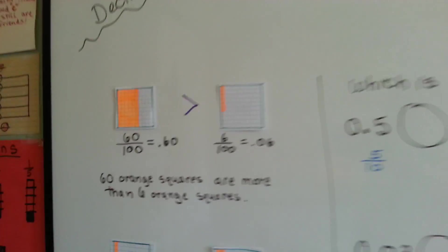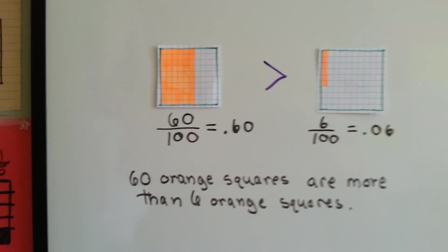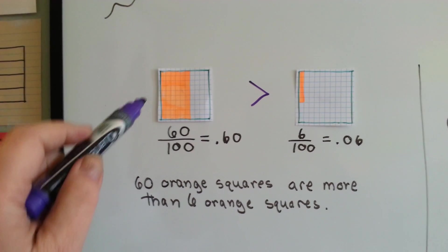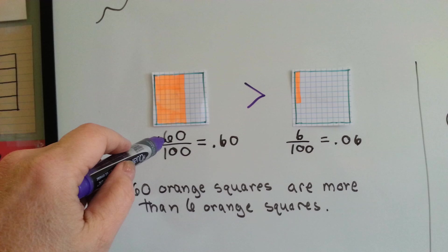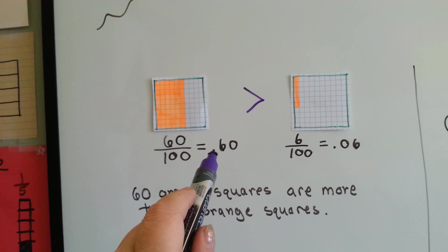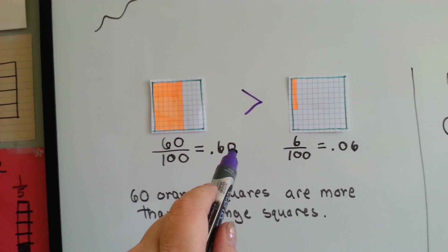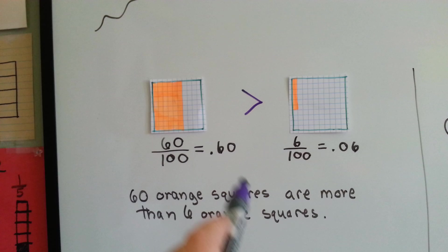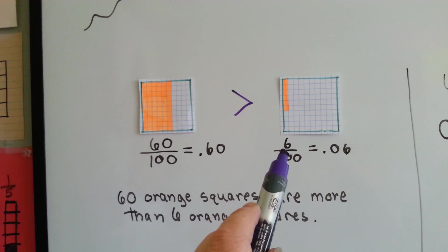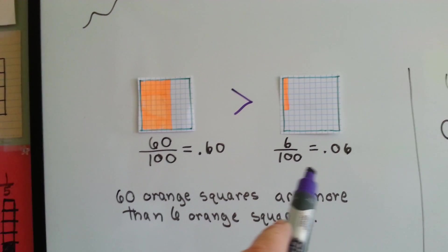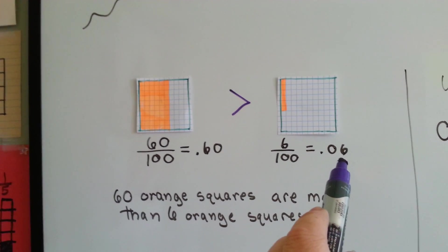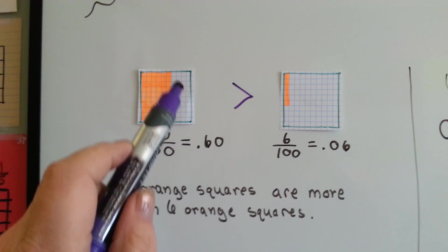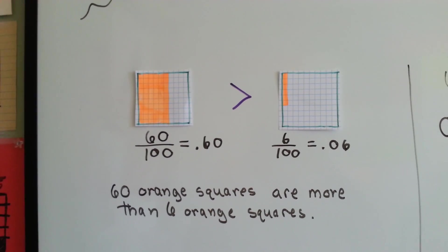So we can compare fractions using place value. Which one is bigger? We've got sixty orange squares filled in out of one hundred squares, which is sixty one-hundredths, because that's the hundredths place. This one has six squares filled out of a hundred squares — it is six one-hundredths. The six is in the hundredths place. So this one's bigger; it's got more orange squares filled in.